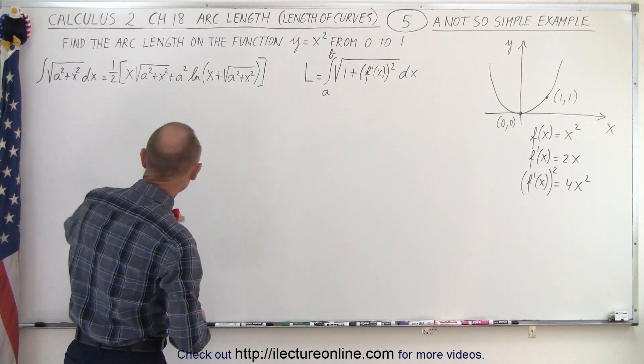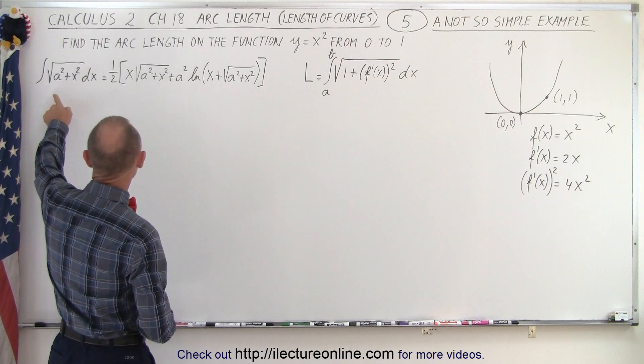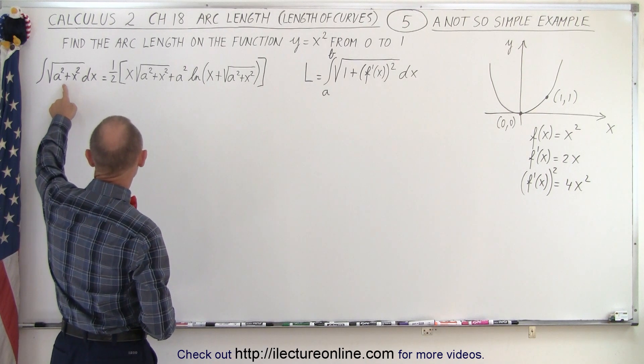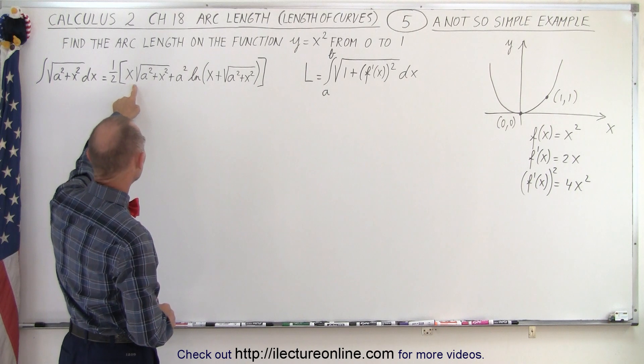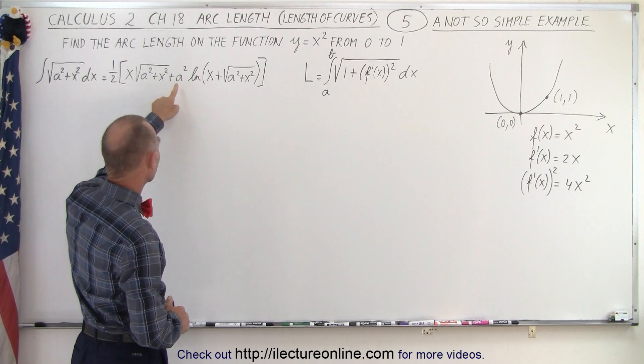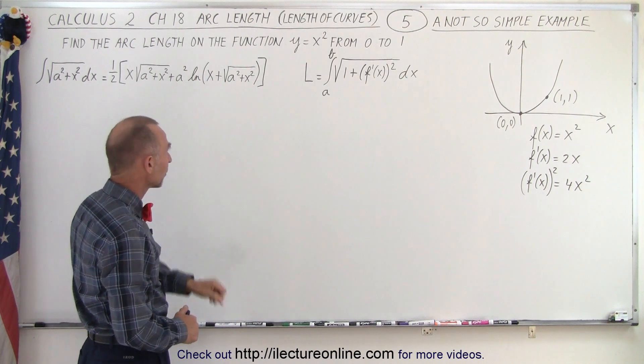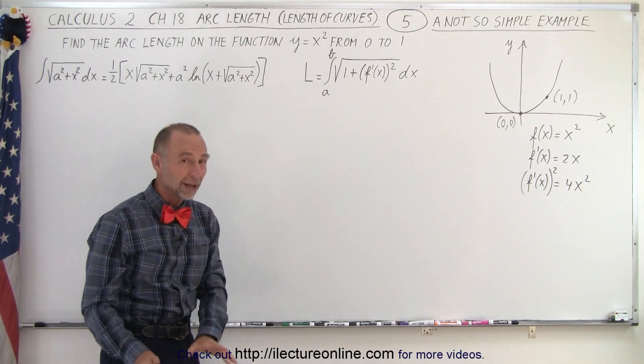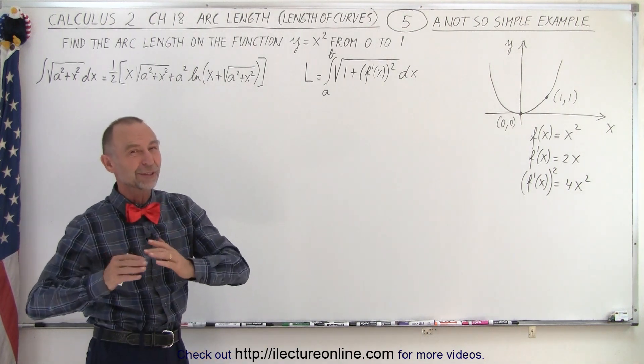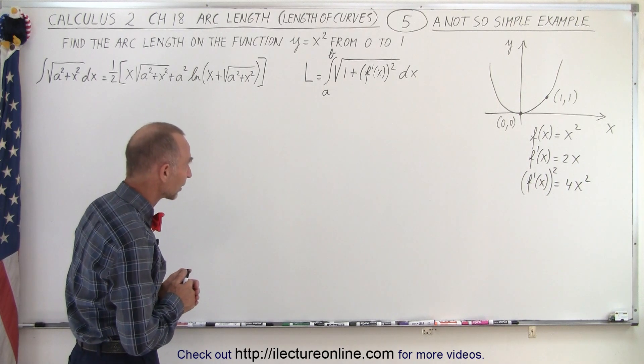But I have, just in case we're going to need it, the integral of the square root of a squared plus x squared is equal to 1/2 times x times the square root of a squared plus x squared plus a squared times the natural log of the quantity x plus the square root of a squared plus x squared. Why do I have that there? Because we're going to need it.